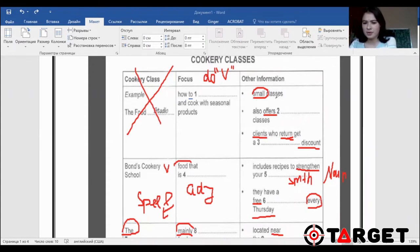Number two, other information, small classes, also offers classes. So offer is my keyword as I have underlined. What type of classes? They can be an adjective, types of classes. Number three, clients who return get some percent of discount. If it's discount, we're going to write a percent here. Usually it's a number.